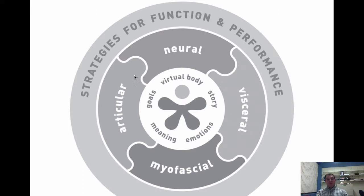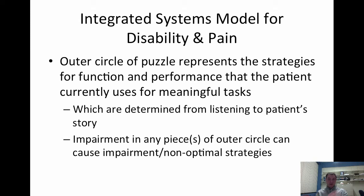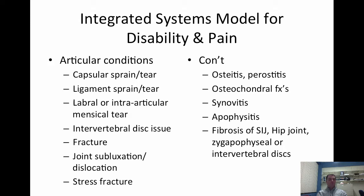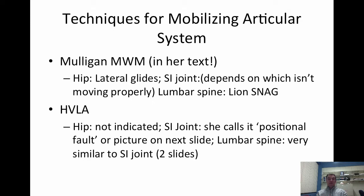Looking at the picture of the model — you see strategies for function and performance, the person in the middle of the diagram, and four components around the diagram: neuro, visceral, myofascial, and articular. Within the center where the person is, you see goals, virtual body, story, emotions, and meaning. Dysfunction in one — say the articular piece — may cause dysfunction in one or more other pieces. If I have a myofascial issue, that could affect my articular, neural, and visceral components of function and performance — that is a regional interdependence model.